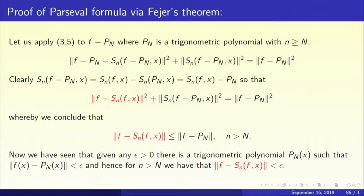Given any epsilon greater than 0, we can bring in a trigonometric polynomial p_n such that norm of f minus p_n is less than epsilon. So the red term norm of f minus S_n(f)(x) is less than epsilon when little n is larger than capital N. That completes the proof of Parseval's formula via Fejér's theorem. This was an important theorem in Chapter 2 which we could not prove then, but now we have completed the proof in Chapter 3.